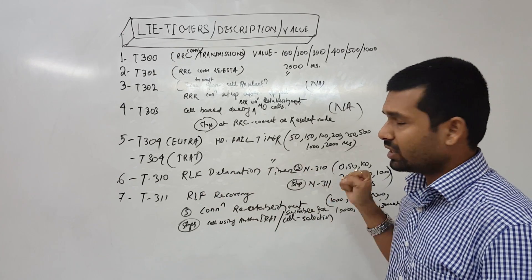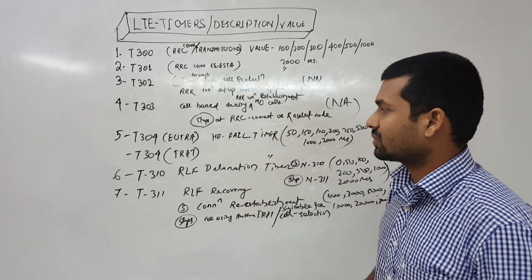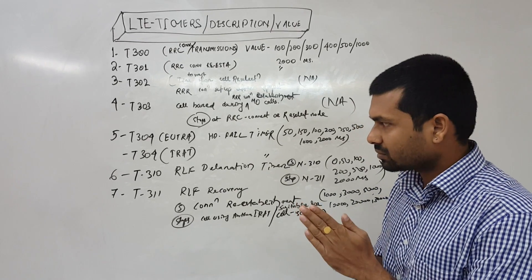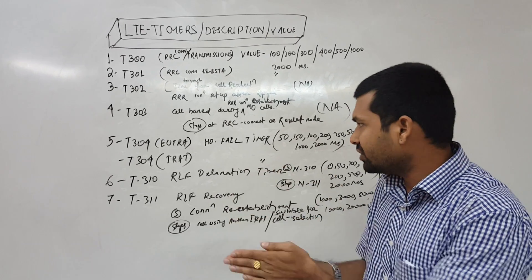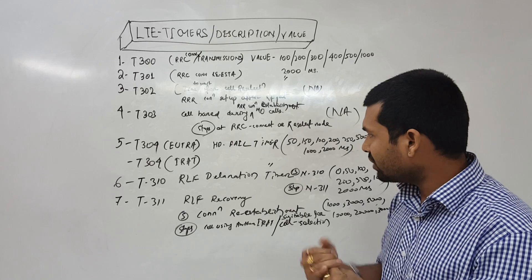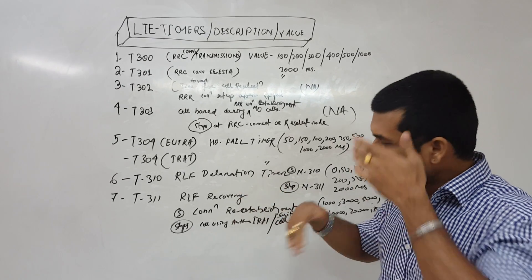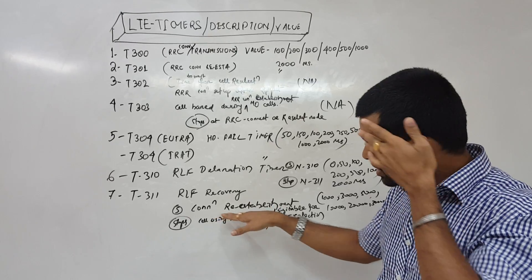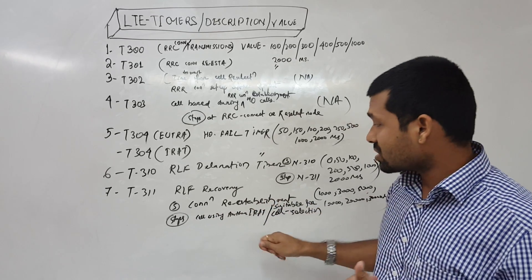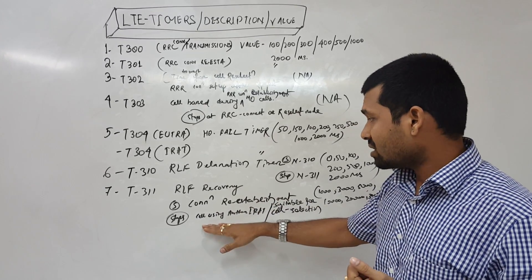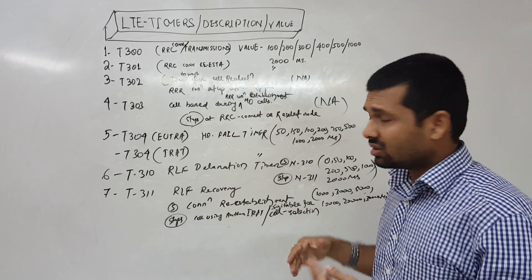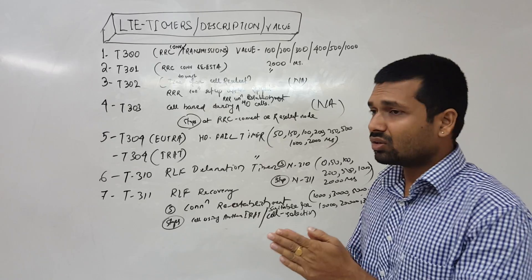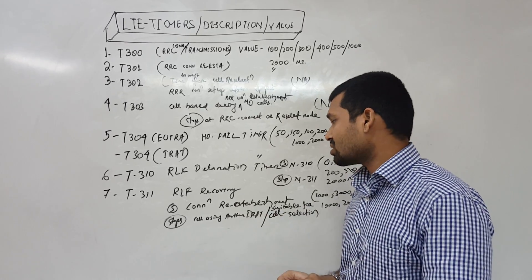T310 radio link failure recovery. Even if radio link failure happens we can re-establish the connection. It starts at connection re-establishment request and it stops at cell reselection using another IRAT. If cell reselection already happened or IRAT already happened, then it stops.